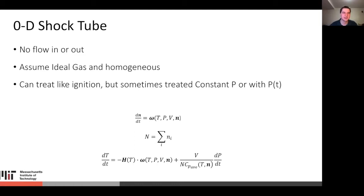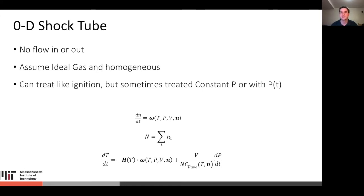Another common case is the 0D shock tube. For a single element within the shock tube, it actually looks very similar to the ignition in a cylinder case — a constant volume element traveling along the shock. Sometimes it's treated as constant pressure or with a pressure profile. Both give relatively similar results, though the equations differ slightly for constant pressure versus constant volume.